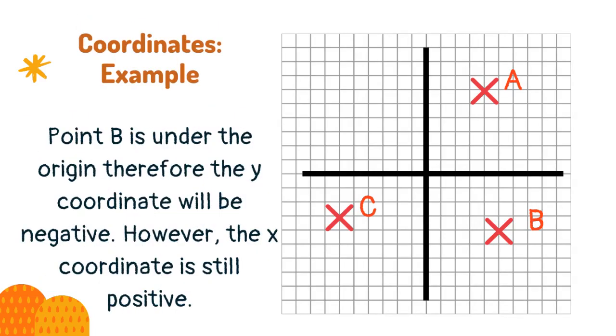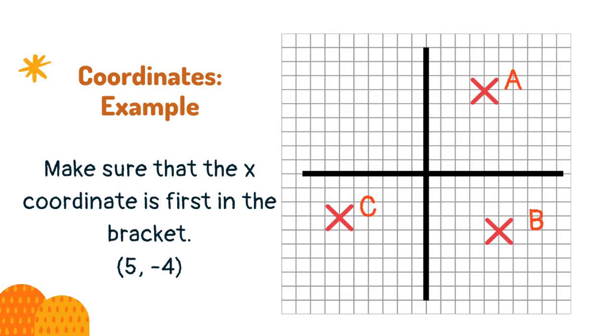Point B is under the origin therefore the y-coordinate will be negative. However, the x-coordinate is still positive. Make sure that the x-coordinate is first in the bracket. 5, minus 4.